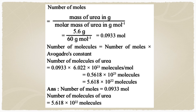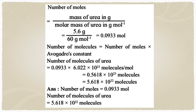Now, number of molecules = number of moles × Avogadro's number = 0.0933 × 6.022 × 10²³ = 5.618 × 10²² molecules. Avogadro's constant Nₐ = 6.022 × 10²³, which you must remember.